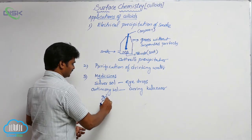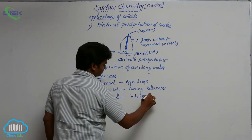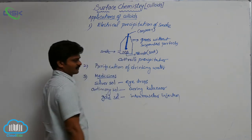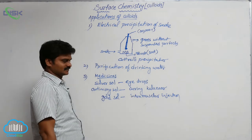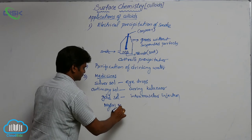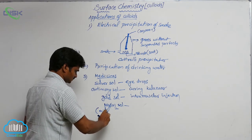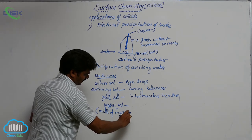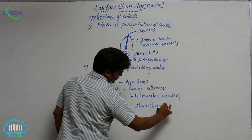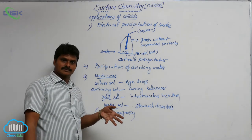Similarly, gold salt is used as an intra-muscular injection. Magnesium hydroxide, also called milk of magnesia, is used for stomach disorders. These are some medicines which are in the colloidal range.